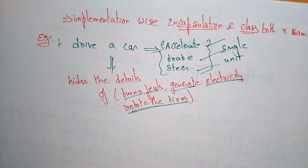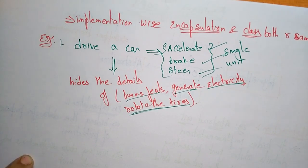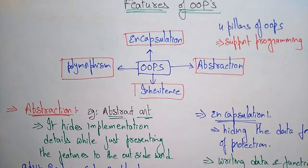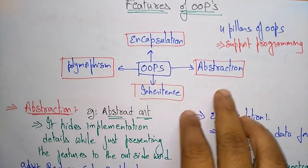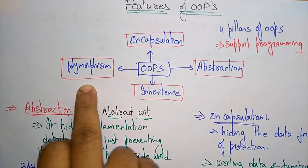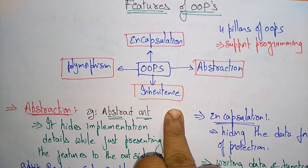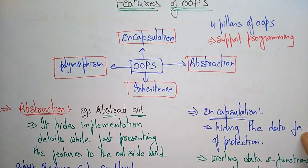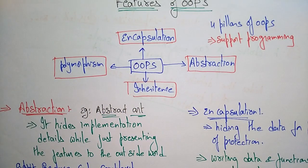In the next video we will discuss the remaining two features — polymorphism and inheritance — the remaining two pillars of object-oriented programming. Thank you.